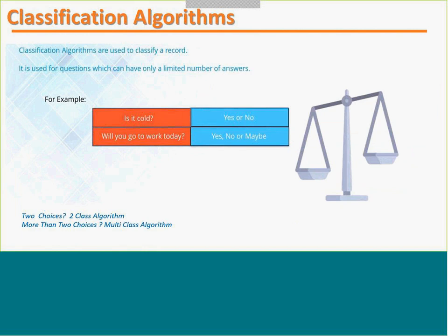Classification algorithms are used to classify a record. For example, if you ask whether someone has a cold — the answer is finite: yes or no. If the answer is finite, go for a classification algorithm. If there are two answers it's a two-class algorithm; if more than two, a multi-class algorithm.